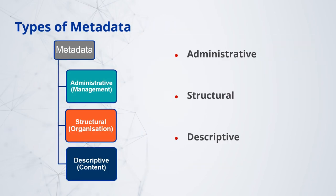Different repositories and metadata professionals have different ways of grouping the types of information that the term metadata covers. But for the purposes of this talk, I've used three of the more common categories: Administrative, Structural, and Descriptive. You might also come across subcategories such as provenance and preservation, but broadly speaking, the information required to manage, understand, and provide access to the data falls under these three headings.